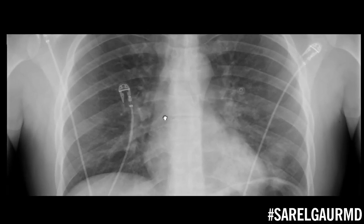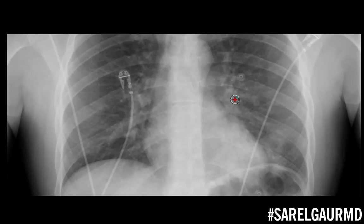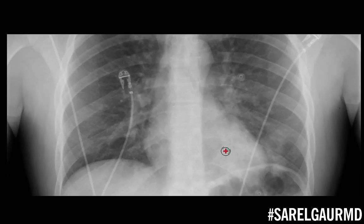Let's look here in the left lung base. There is this ill-defined airspace opacity here, and this is a pneumonia — what we would call a retrocardiac pneumonia. If you look very closely right here, you can actually see a faint air bronchogram, and that only shows up if the surrounding lung is filled with fluid.